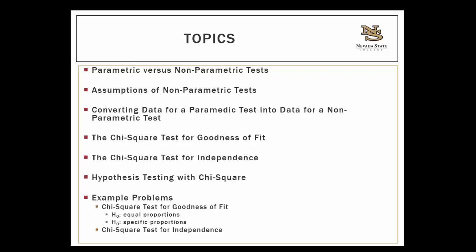We're going to be stating a null and alternative hypothesis, finding a critical value, calculating the test statistic, and then comparing that test statistic to the critical value to make our decision and state our conclusion. Then the next video will cover example problems for the chi-square test goodness of fit and the chi-square test for independence.